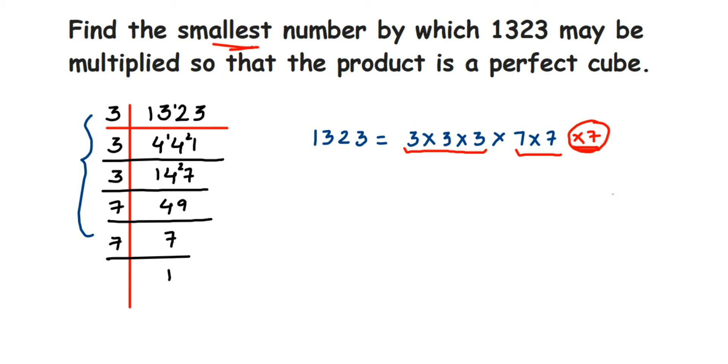So the smallest number to be multiplied here is 7. If I multiply 1323 by 7, the number will become a perfect cube. The answer is 7.